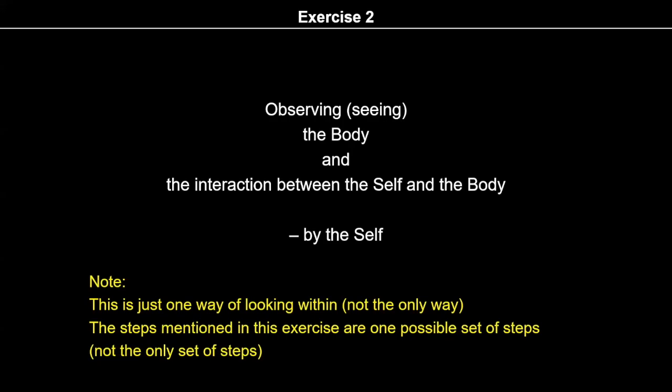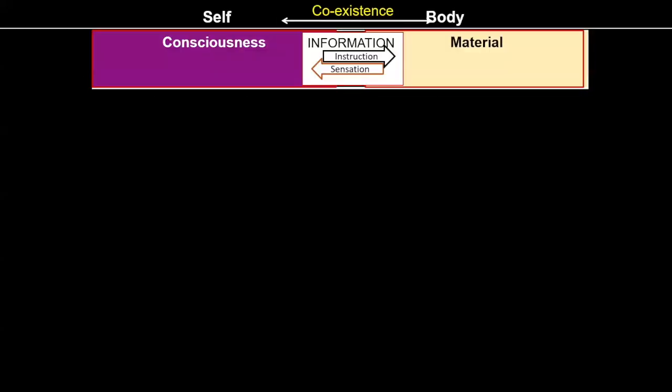In Step 1, we are trying to observe that there are two realities: consciousness and the body. It is important to observe these two realities distinctly. If I have observed properly that there are two realities — self and body — then the next steps will be fruitful. This first step looks very simple, but it is very important: there are two realities, self and the body, consciousness and the material.